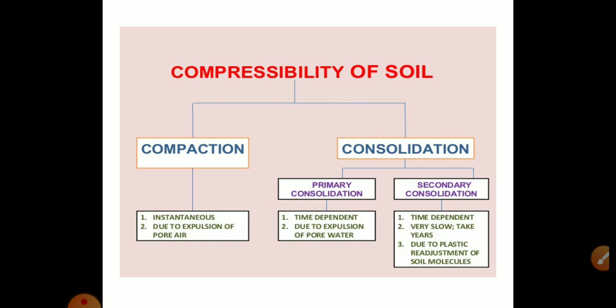Compressibility of soil is broadly classified into compaction and consolidation. Compaction is an instantaneous process, mainly due to the expulsion of pore air. Consolidation is a time-dependent process. There are two types: primary consolidation, due to the expulsion of water from the voids, and secondary consolidation, which is a very slow process taking years to complete, due to the plastic readjustment of soil molecules.